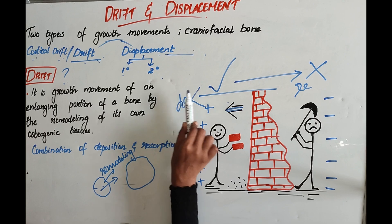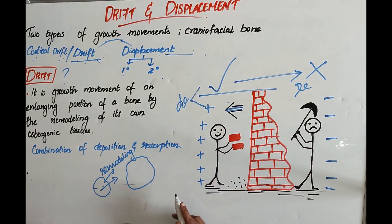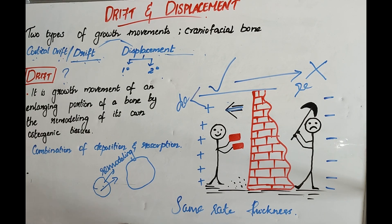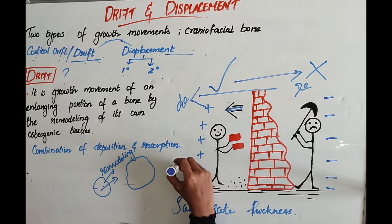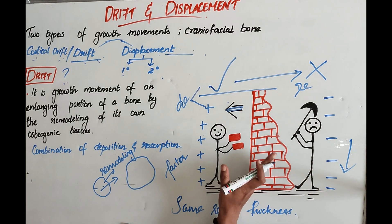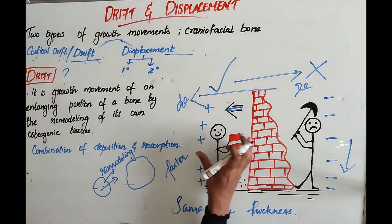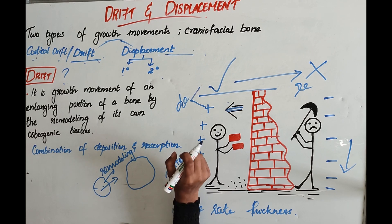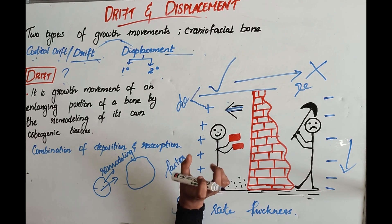If bone deposition and resorption take place at the same rate, the thickness of the bone will remain the same — there will be no change in thickness. But during the developmental period, deposition is at a faster rate. Resorption will be a bit slower. So there will be enlargement of the bone because of more deposition in that direction. That's all about drift.